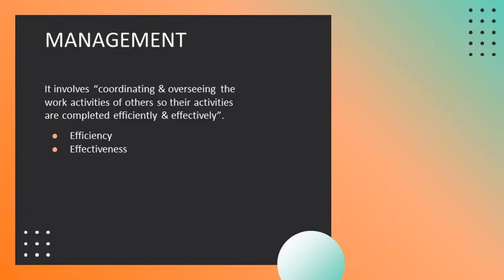What is management? It involves coordinating and overseeing the work activities of others so their activities are completed efficiently and effectively. Efficiency means doing things right, while effectiveness means doing the right things. So efficiency is all about means — resources or the usage of resources to get most output for the least inputs — while effectiveness is all about ends, outcomes, or goal attainment.